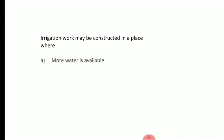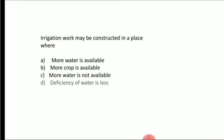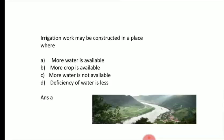Irrigation works may be constructed in a place where — Option A: more water is available, Option B: more crop is available, Option C: more water is not available, Option D: deficiency of water is less. Answer is Option A, more water is available. Irrigation works should be constructed where water is well available so channels can distribute it effectively.